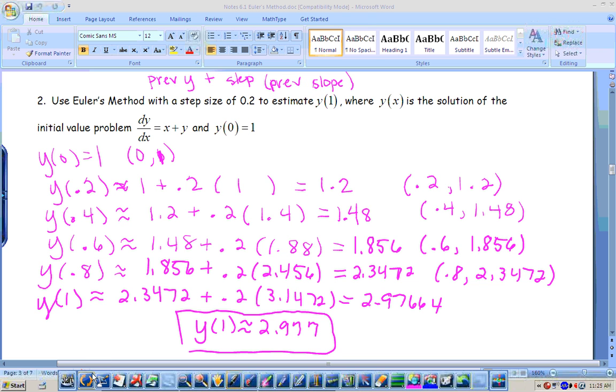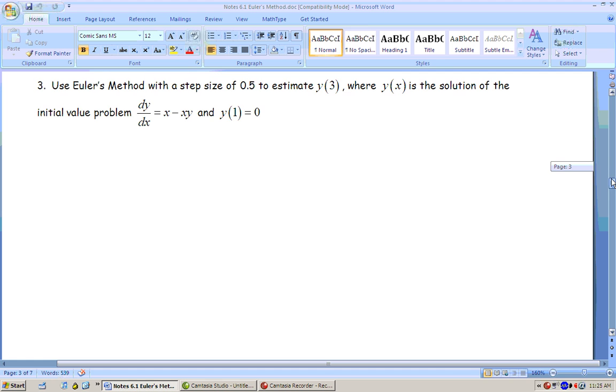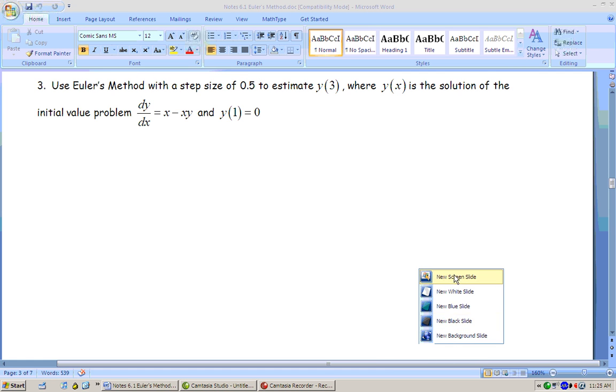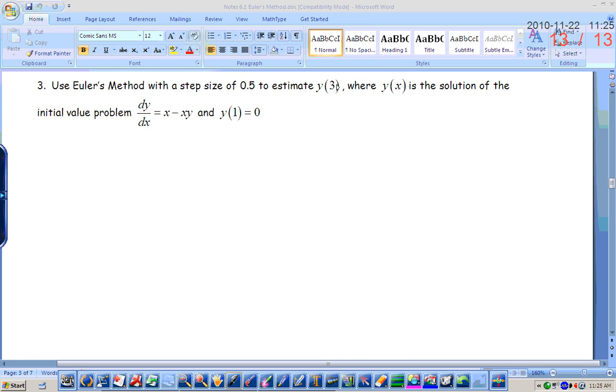Alright, so since they don't make you do more than two steps, I'm going to modify number 3. I want to estimate, I'm going to use Euler's method with the step size of 0.5 to estimate y of 2. Okay. Alright, I want you to try this on your own. Get your calculators out. I want an approximation of y of 2 accurate to three decimal places. You can work together if you would like.